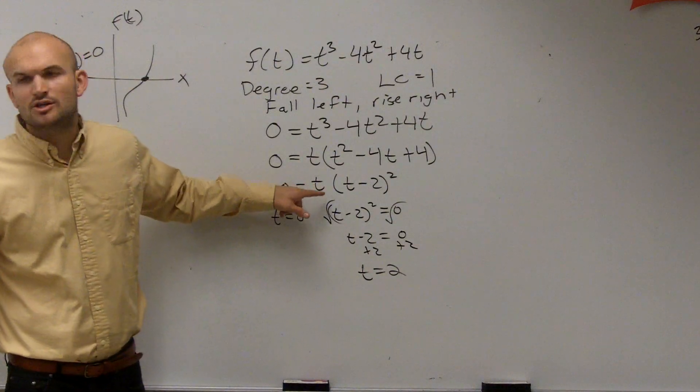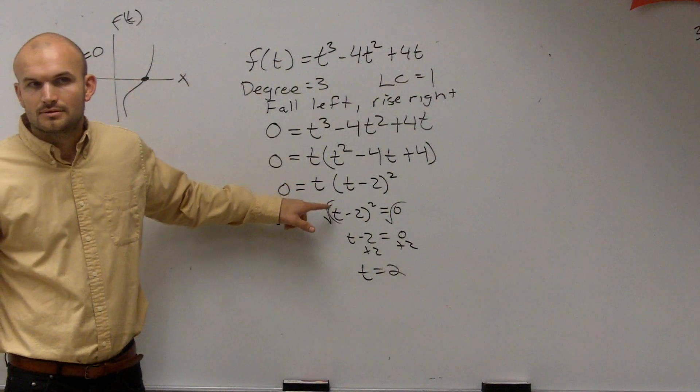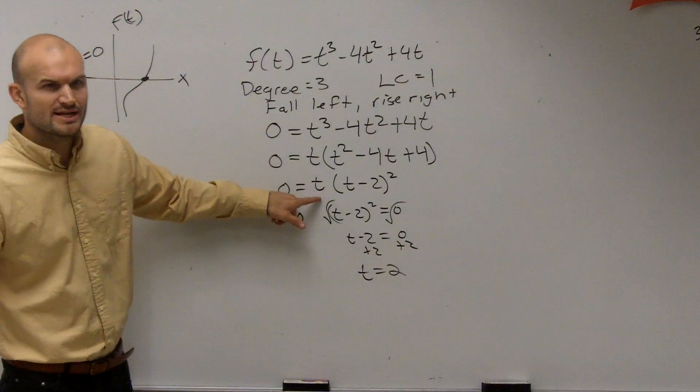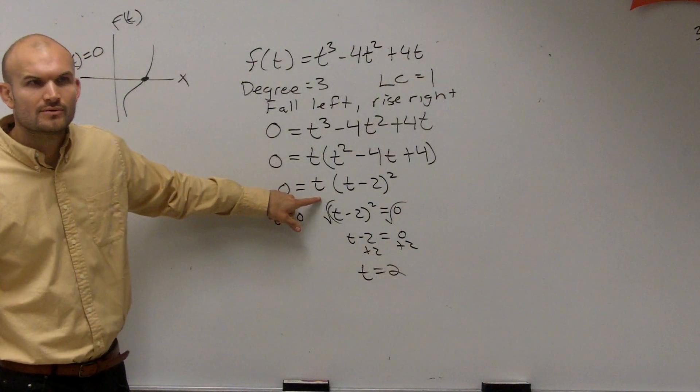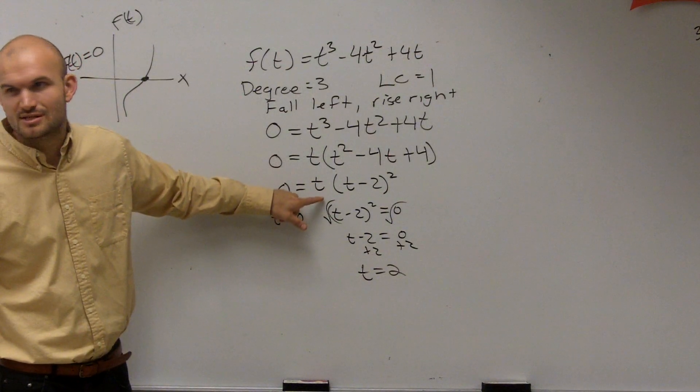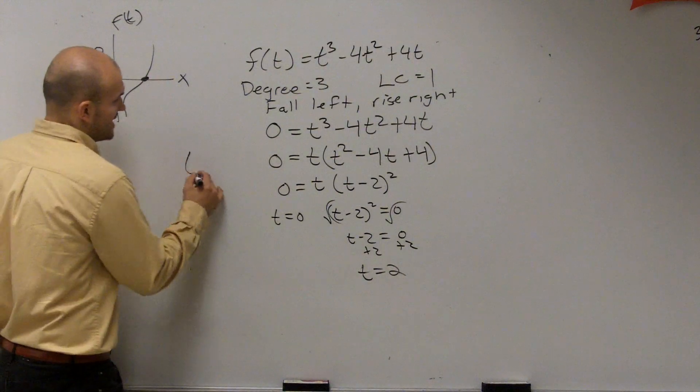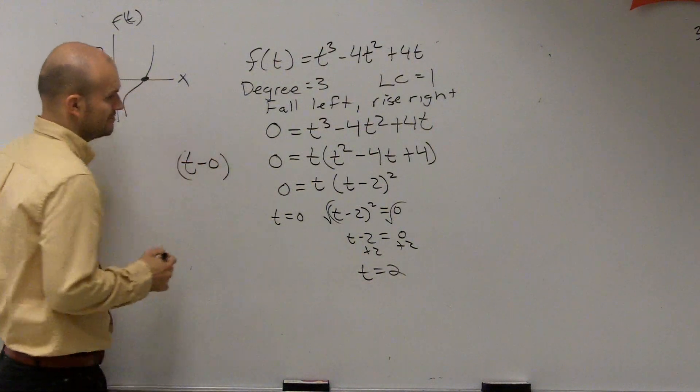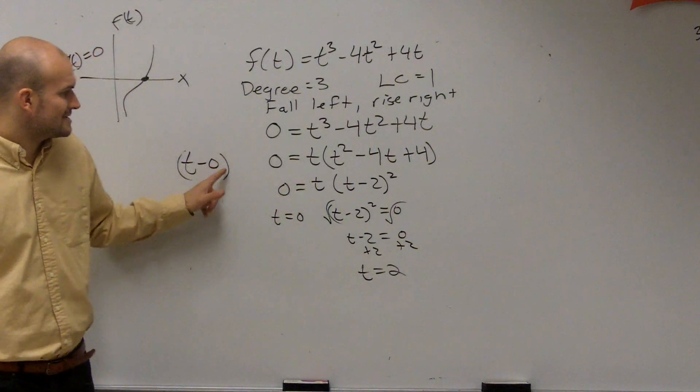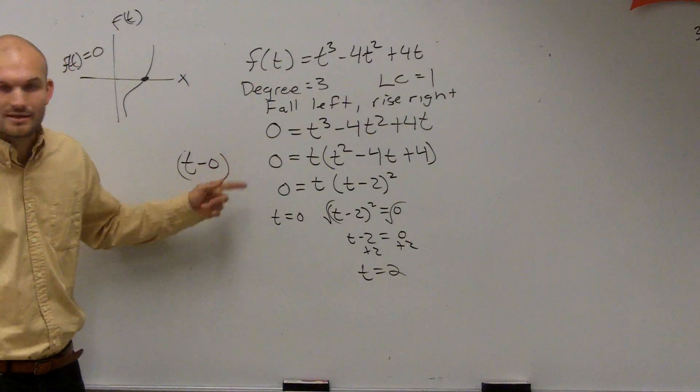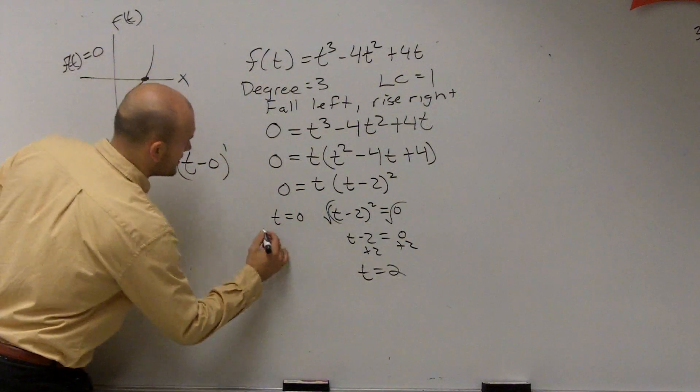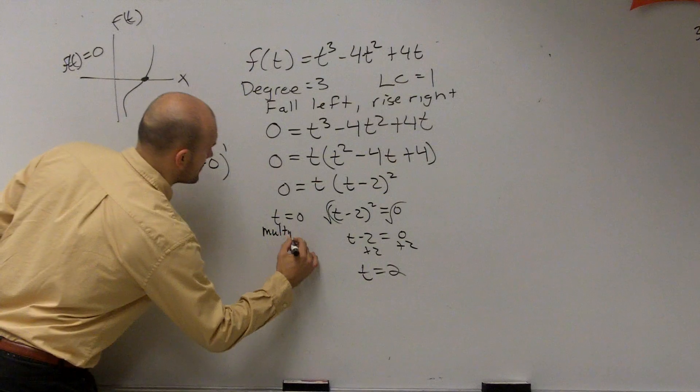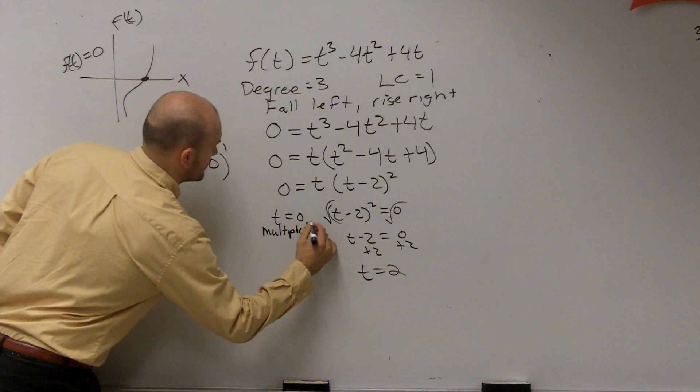So t equals 0. What is that, what was the multiplicity on that? Well, first of all, is this written as a factor? No. How can we write it as a factor? I can write t just as a factor. T equals 0. Yeah, t minus 0. Right? But if I write t as t minus 0, does it still have an exponent or anything? No. So we'll write here as a multiplicity of 1.